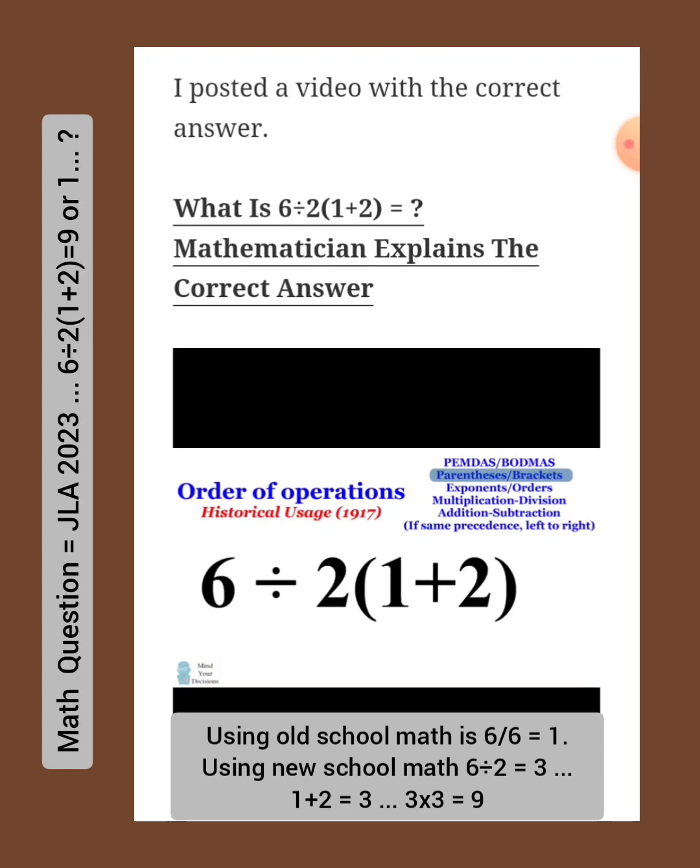So the first part of the equation is the same as before. We have a parenthetical expression, and this should be evaluated first. We have 1 plus 2, and that becomes 3.